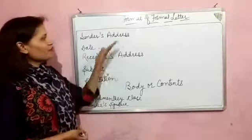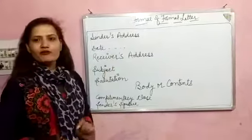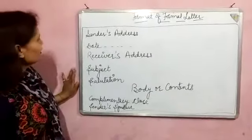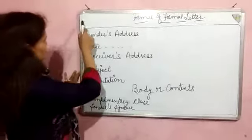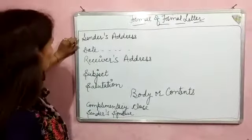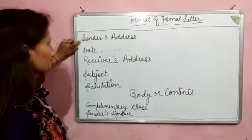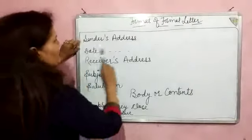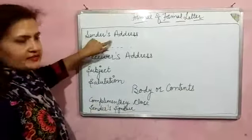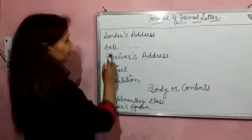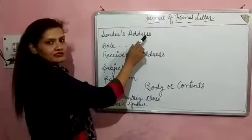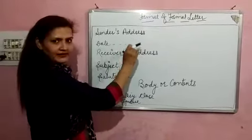Moving on to the format of formal letters. On the top left corner of the box, we write the sender's address. Sender's address means the address of the person who writes the letter.